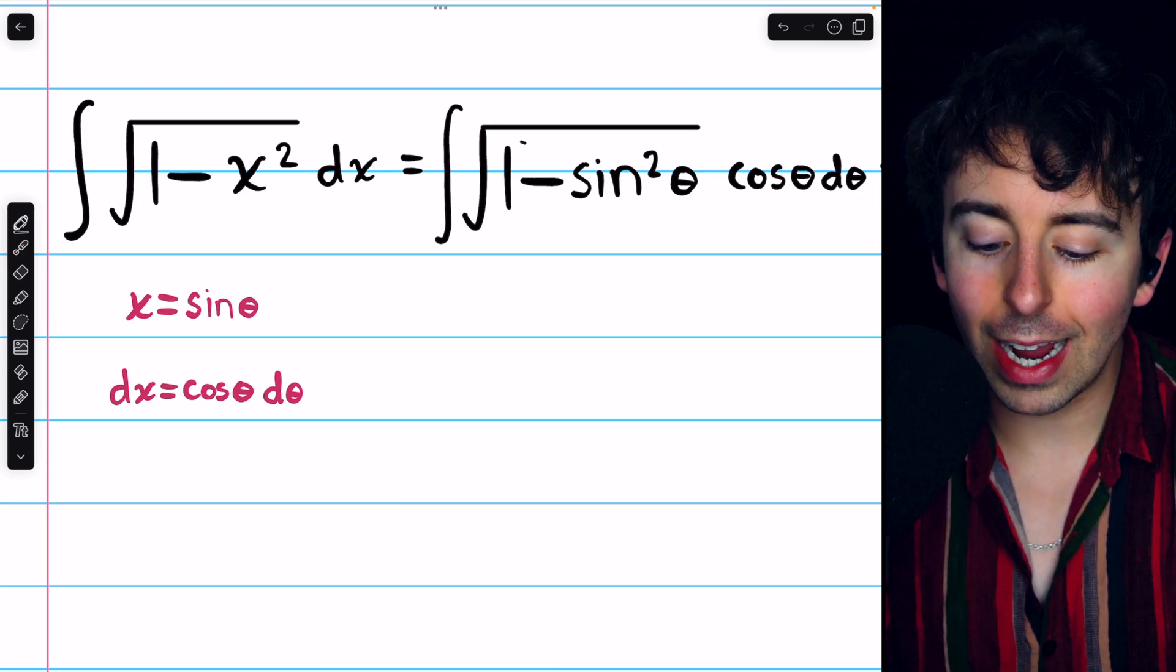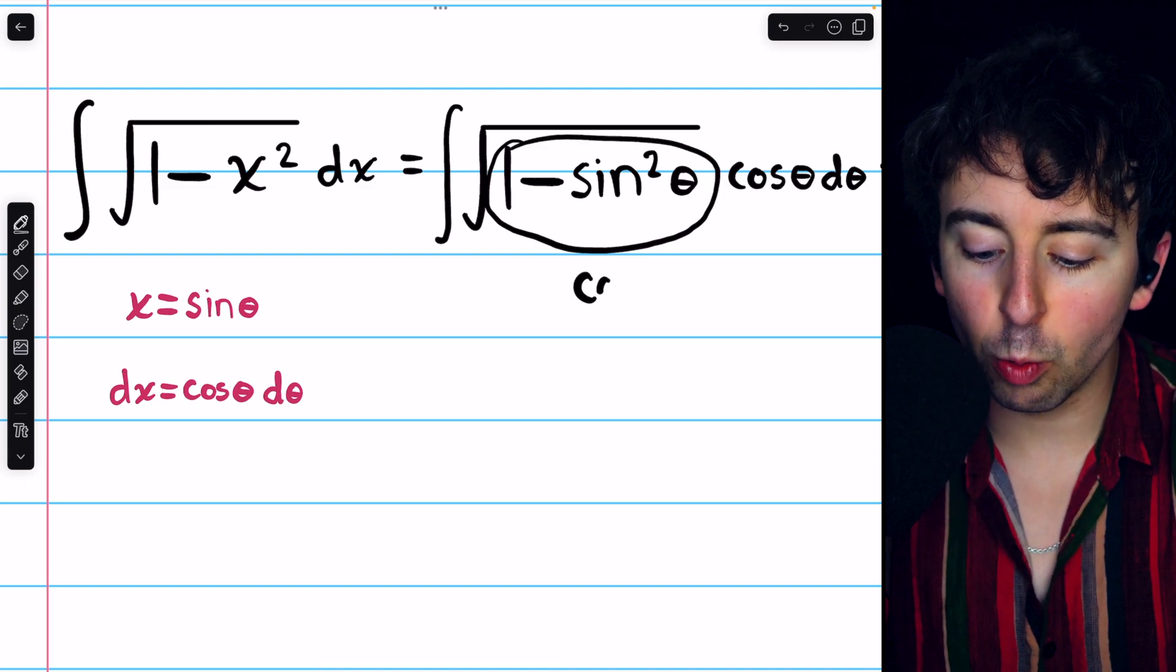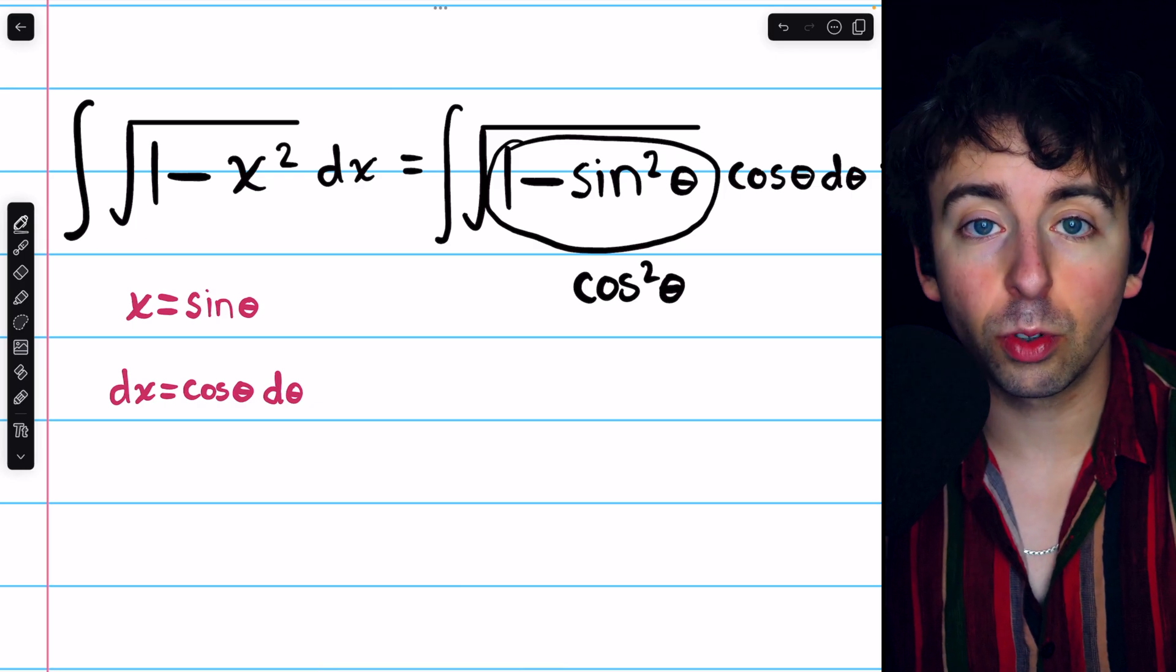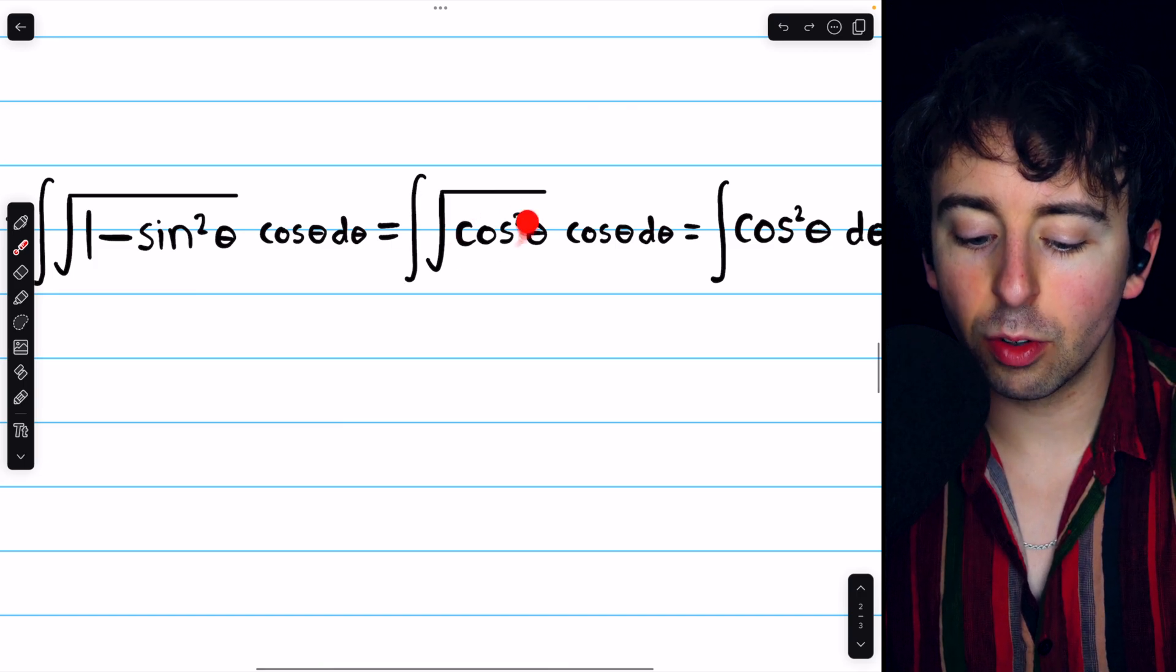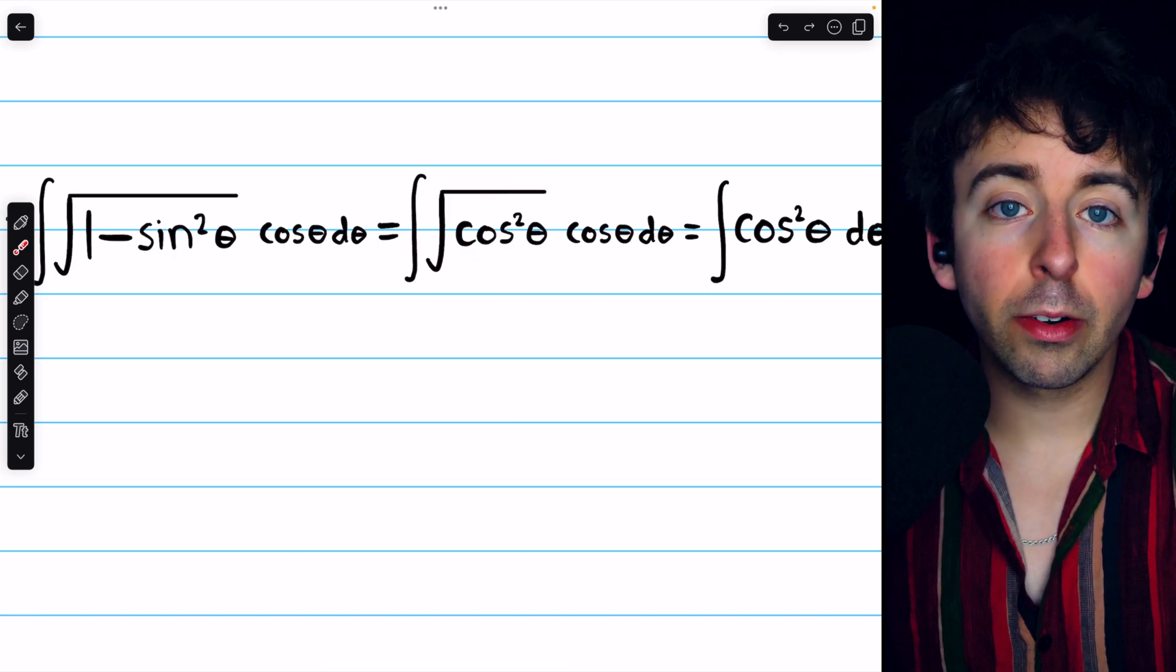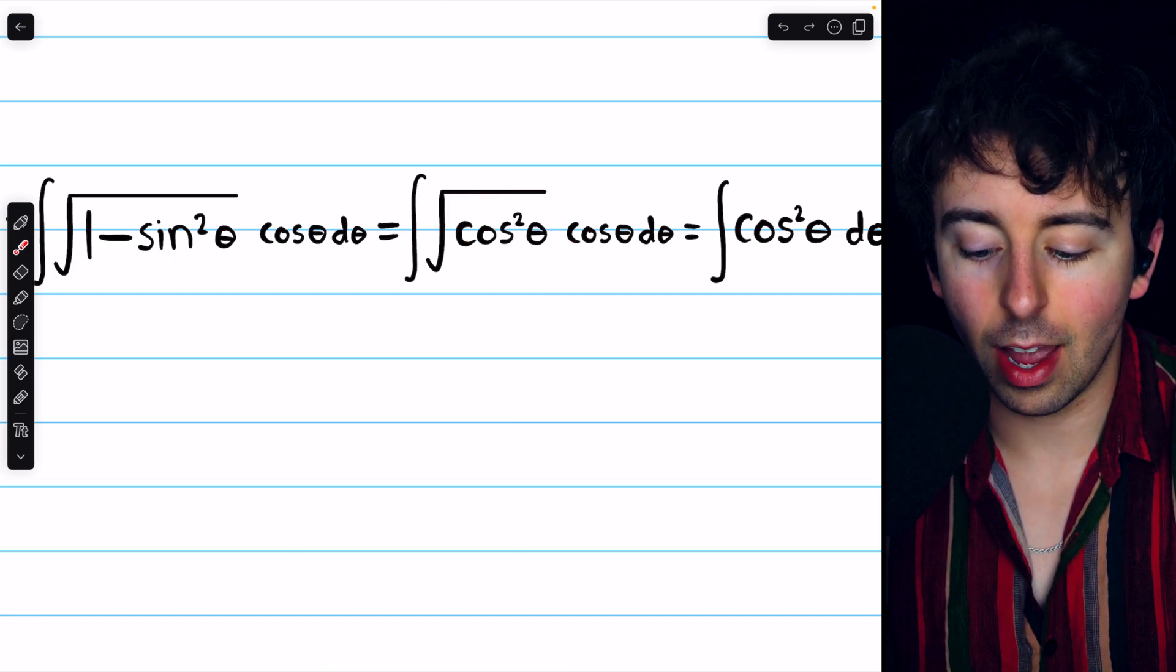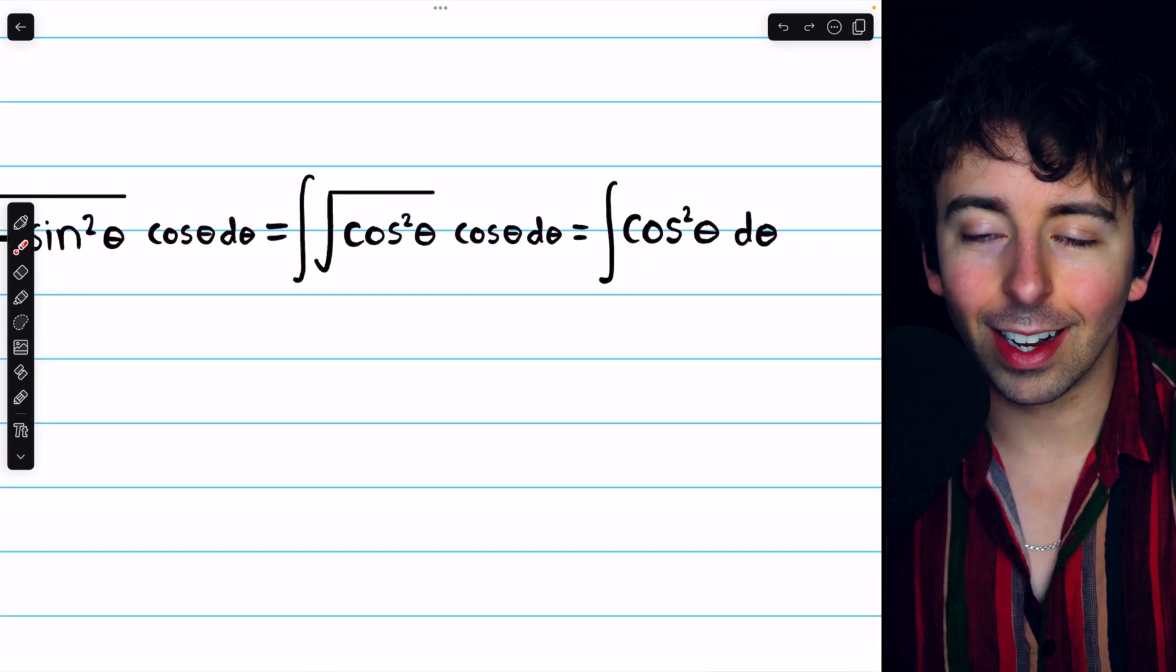Now, you may recognize 1 minus sine squared theta under the square root by the Pythagorean identity. That's just cosine squared under the square root. So then this integral is the integral of the square root of cosine squared theta times cosine theta d theta. Of course, the square root of cosine squared is just cosine, so we have one cosine and a second cosine. So we end up with just the integral of cosine squared theta d theta.